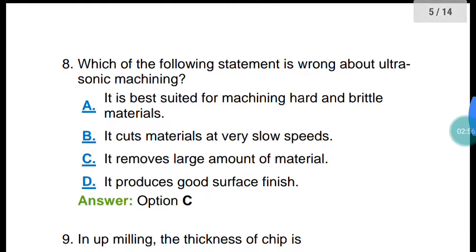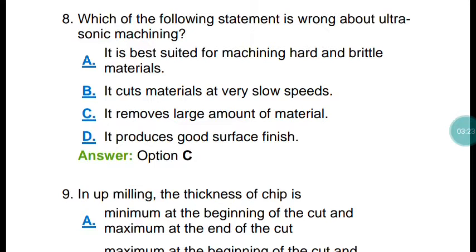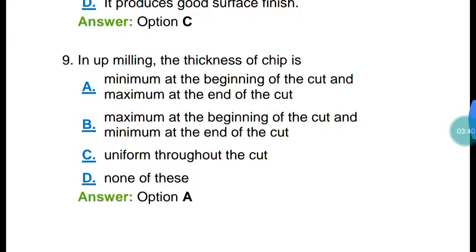Question number eight: which of the following statements is wrong about ultrasonic machining? Option A — it is best suited for machining hard and brittle materials — is correct. Option B — it cuts metal at very low speed — is also correct. Option C — it removes a large amount of material — that is wrong. Ultrasonic machining removes very little material. Option D — it produces good surface finish — is also correct. So the wrong statement is option C.